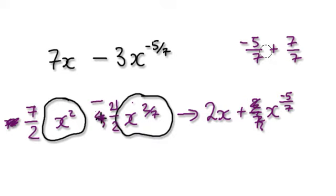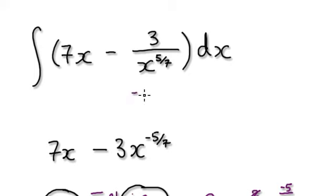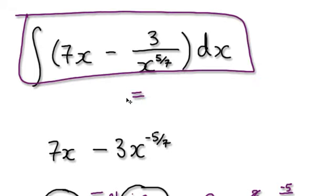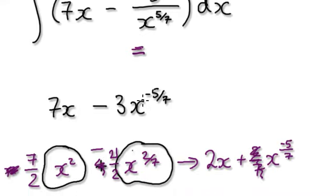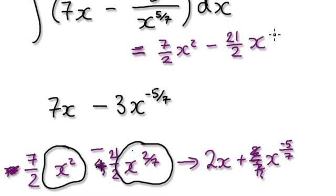So overall, the answer here will be equals 7 over 2x squared minus 21 over 2, is it 2? Over 2, and then x to the power of 2 over 7 plus c.